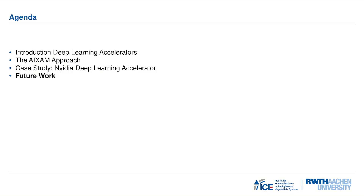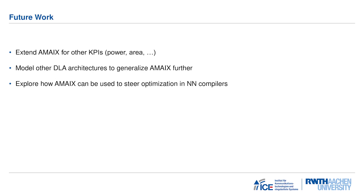Let me conclude with some remarks on future work. So far, Amex covers only performance, which is a very significant KPI. In the future it would make sense to extend Amex to cover other KPIs such as power or area. We would also like to undertake further case studies and model other architectures to further generalize our model. Finally, it would be interesting to explore how an analytical model like Amex can guide compiler optimizations in neural network compilers — for example, to decide between standard and Winograd convolution for the convolution layers of a CNN.